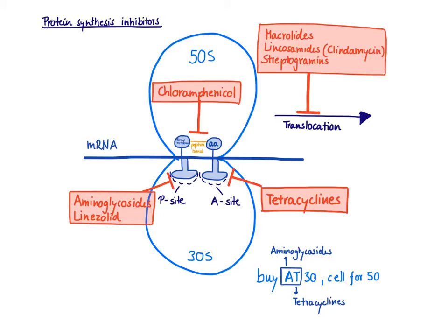Any of these steps can be inhibited by drugs. The tRNA binding to the P site can be inhibited by the aminoglycosides and the oxazolidinones, where one example is linezolid. The binding of the tRNA to the A site can be inhibited by the tetracyclines. Peptide bond formation can be inhibited by chloramphenicol. And then there are three groups of drugs that all inhibit translocation — once the ribosome shifts three base pairs downstream — and these are the macrolides, the lincosamides (where the major example is clindamycin), and the streptogramins. They all have a very similar mechanism of action.